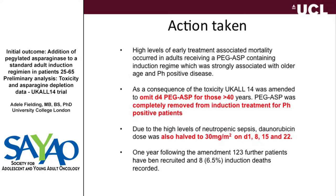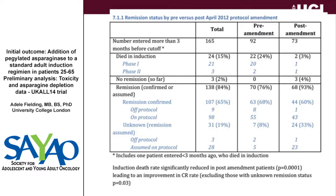The induction death rate declined very steeply after we made that modification and came down to 6.5%, which I'd like it to be lower, but in a population aged up to 65 it's probably acceptable. One of the things we were obviously very concerned about in taking away elements of treatment in induction was whether we would, in the long run, impact the relapse risk — and obviously it's going to take a while for that to work through.